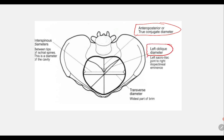The left oblique diameter goes from the left sacroiliac joint to the right iliopectineal eminence. The transverse diameter is the widest part of the brim between the farthest points of the iliopectineal line. The interspinous diameter between the tips of the ischial spines is at the level of the pelvic cavity.